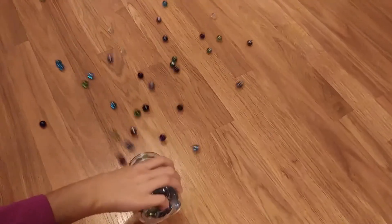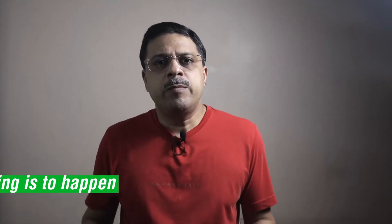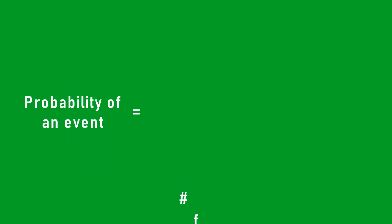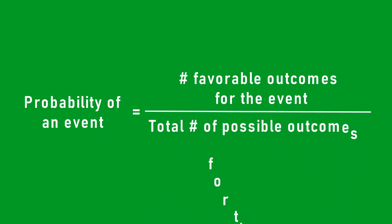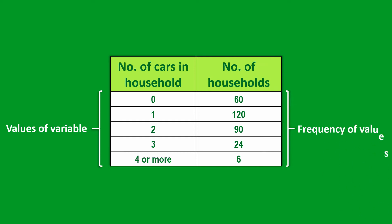Marble and dice is definitely not what we are doing in this video. Probability is simply how likely something is to happen. Whenever we are unsure about the outcome of an event, we can talk about the probabilities of certain outcomes. Mathematically, the probability of an event is the count of favorable outcomes divided by the total number of possible outcomes. Distribution is the possible values a variable can take and how frequently these values occur.